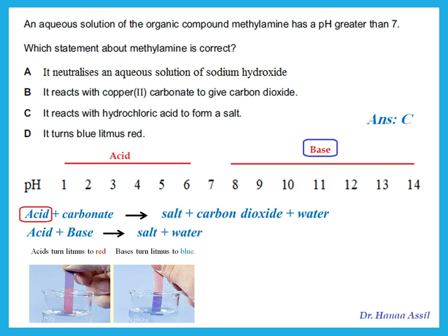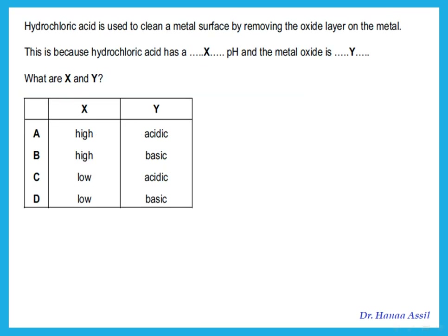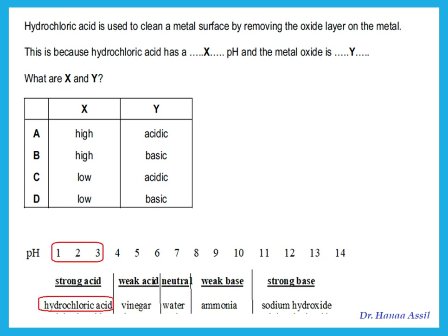Hydrochloric acid is used to clean a metal surface by removing the oxide layer. This is because hydrochloric acid is a strong acid with a low pH of 1, 2, or 3. When the acid reacts with the metal oxide, that oxide is acting as a base. An acid reacts with a base, and a base reacts with an acid.